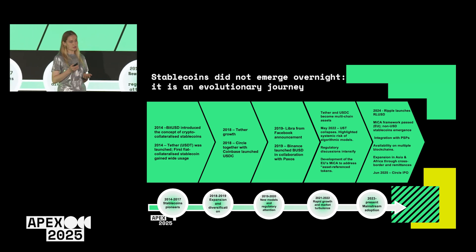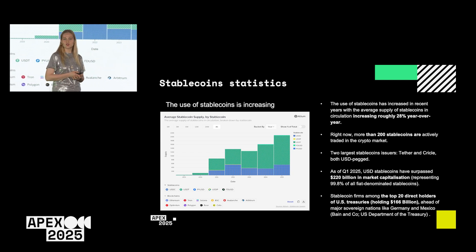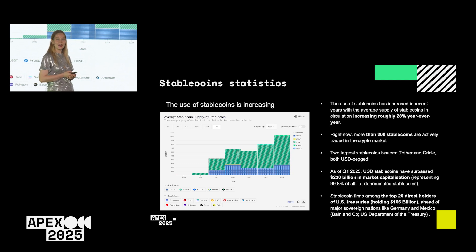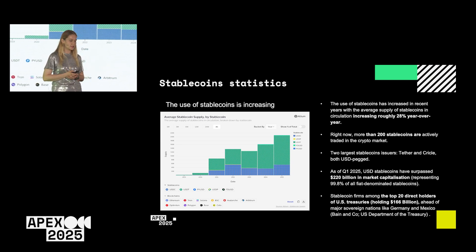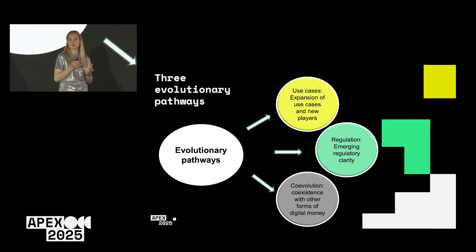Just last week we saw Circle's IPO. Some interesting stats: stablecoin issuers are in the top 20 direct holders of US Treasuries, ahead of Germany and Mexico for example. We also have more than 200 stablecoins actually traded at the moment. Volumes and market capitalizations are growing, with forecasts expecting the market to reach almost 4 trillion US dollars by 2030.